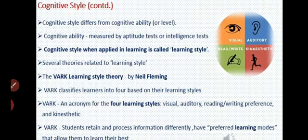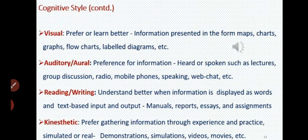सबकी अपनी-अपनी cognitive ability के लिए अलग-अलग styles और strategies होनी चाहिए. जैसे Bloom's taxonomy में तीन parts में divide किया गया है, उस हिसाब से teaching strategies को plan करके हम बच्चों को सिखाने में help कर सकते हैं — जैसे visual aids, auditory, read-write, kinesthetic. इन सभी senses को involve करके हम बच्चों को target language better way में सिखा सकते हैं. Visual — prefer or learn better with information presented in maps, charts, graphs, flow charts, diagrams, etc.